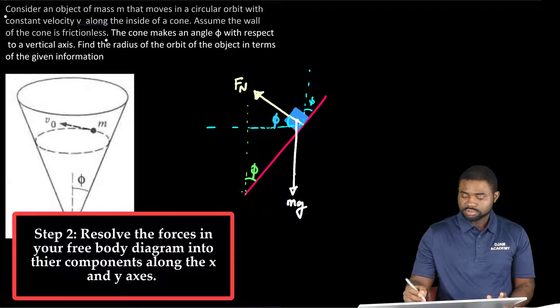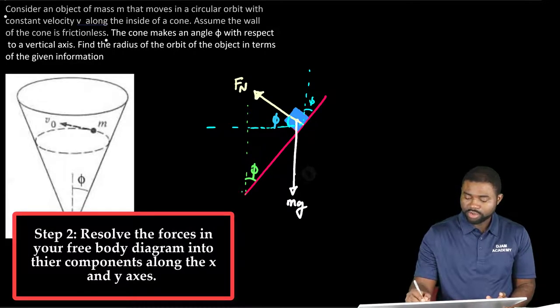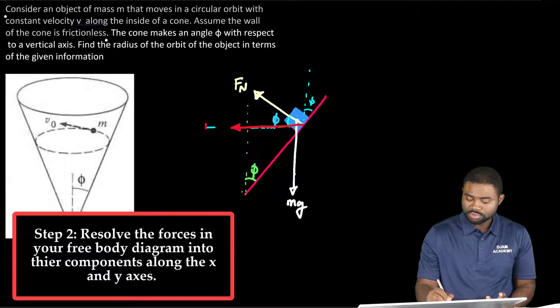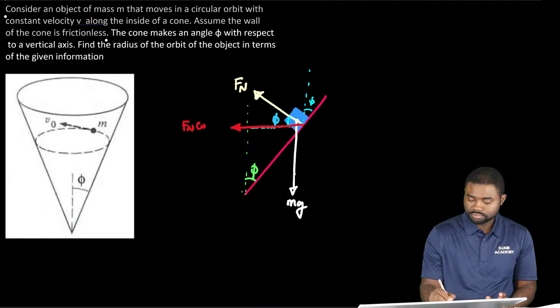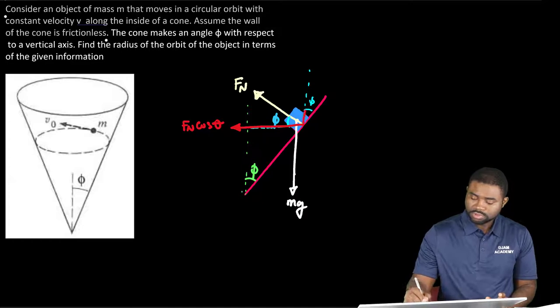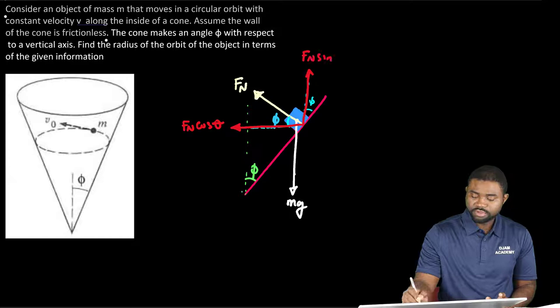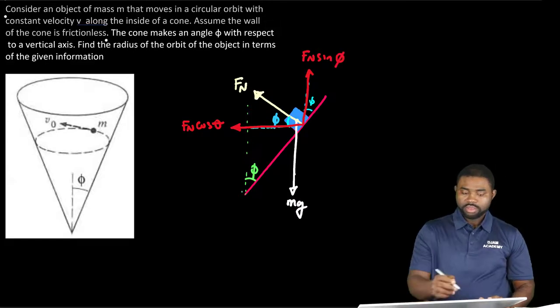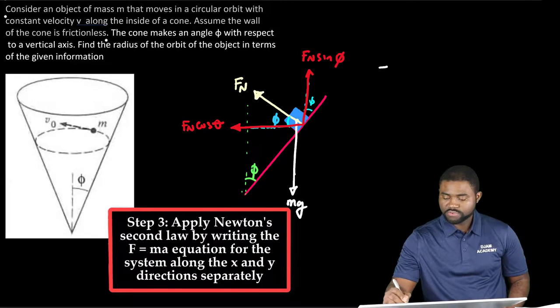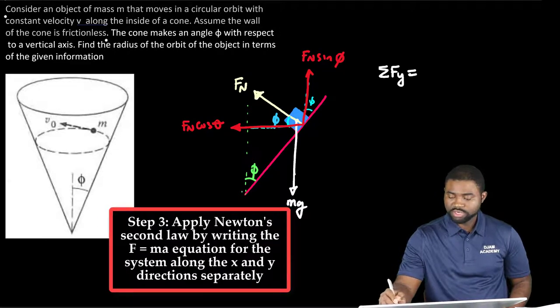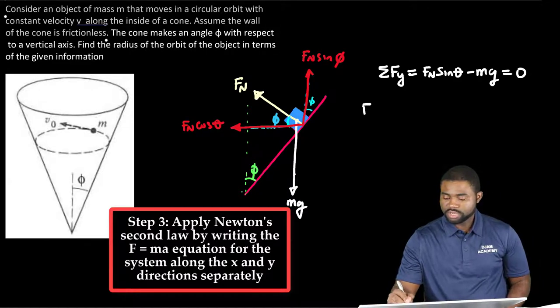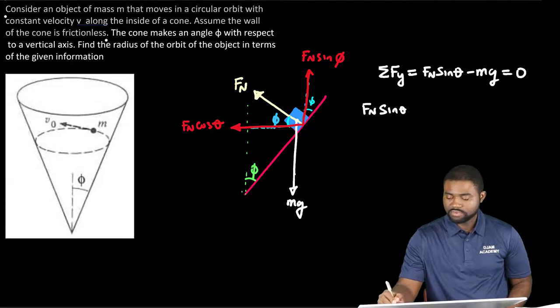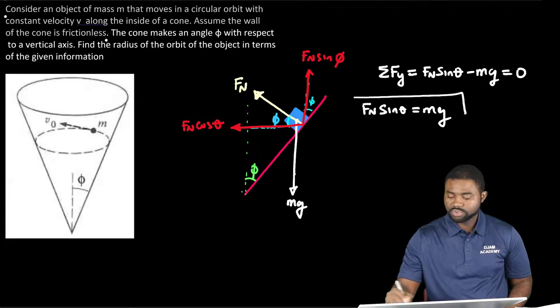So if we resolve FN we have this will be FN cosine phi. And if that is the case we know that the sum of forces along the y direction is going to be equal to FN sine phi minus mg, all of that should be equal to 0. That means that FN sine phi is equal to mg. Let's call this equation 1.